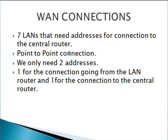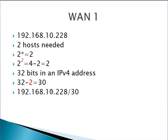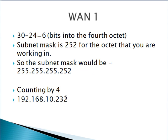Now we're getting into our WAN connections. These are point-to-point connections, so we only need two addresses — one for the connection to the central router and one for the router connected to the rest of the LAN. The first WAN starts at 192.168.10.228. Two squared is 4, minus 2 gives us two hosts. 32 bits minus 2 is 30, so our first WAN is 228/30. 30 minus 24 is 6 bits, so 252 is our subnet mask for that octet. Counting by 4, the next one starts at .232.